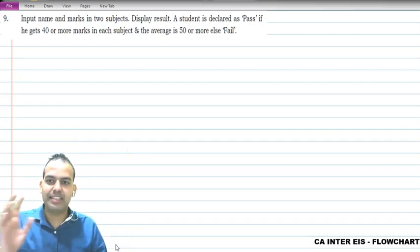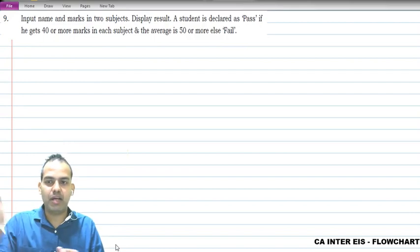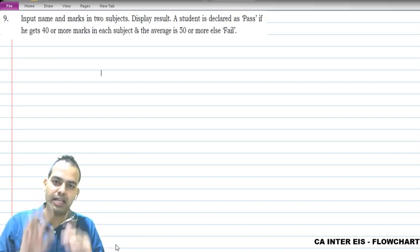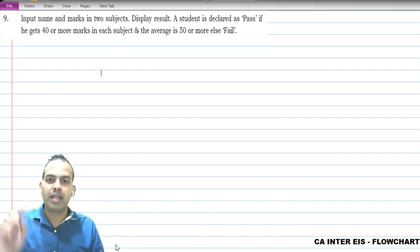Hi, so the next question we're taking right now, earlier we did the 8th one, now this is the 9th one, a little bit advanced of the 8th version. Input name and marks in two subjects - again the same thing which we are inputting. Display result - same thing. A result is declared as pass if he gets 40 or more marks in each subject.